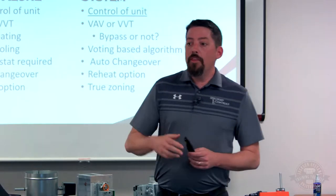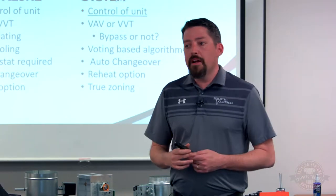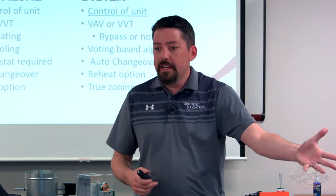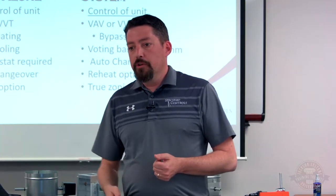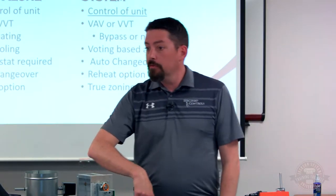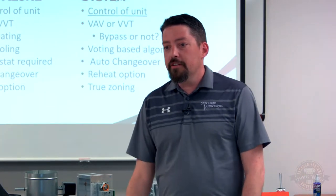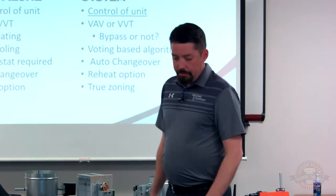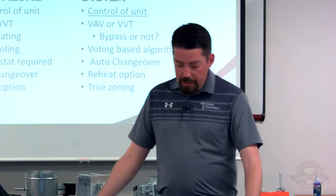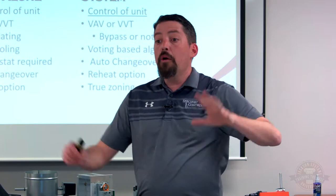Whether it's VAV or VVT, most cases use a voting system — if a majority of zones call for heating, we go heating; majority calling for cooling, we go cooling. The exception is a VAV system with reheat, where we're always in cooling — 55-degree air comes down the duct, and we heat areas that want heat while delivering cooling to those that want it. With a system we have more reheat options and can modulate heat if needed, giving us true zoning controlling all the airflow.